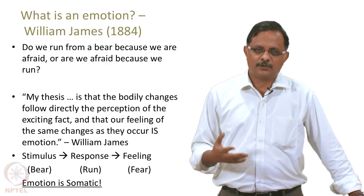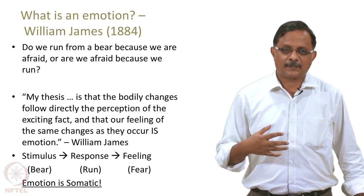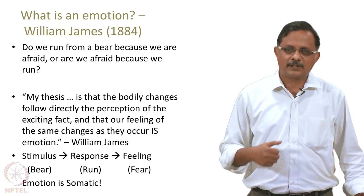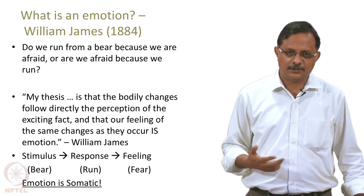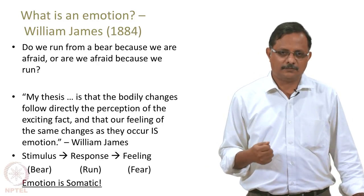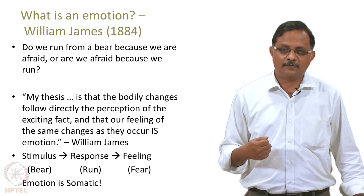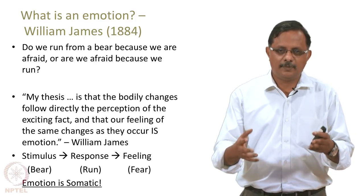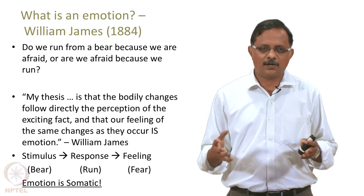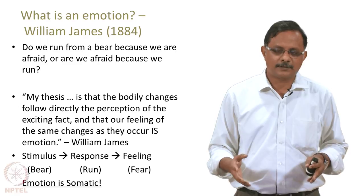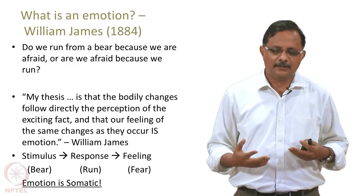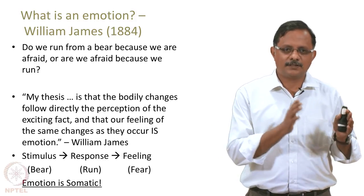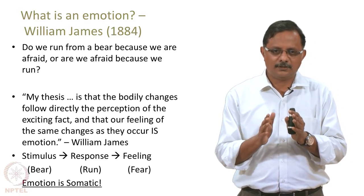One of the first theories about the bodily response to emotion was proposed by William James, an American psychologist working towards the end of the 19th century. His work starts with a simple question: do we run from a bear because we are afraid, or are we afraid because we run? The normal common sense understanding is: you see a bear, you get scared, and that fear makes you run away. The normal sequence is: stimulus, then feeling of emotion, then response.